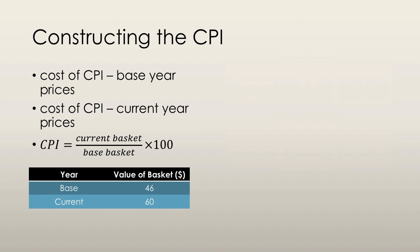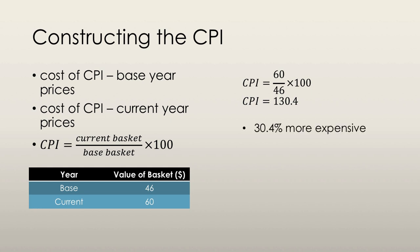CPI is equal to the current basket over the base year basket, multiplied by 100. So we take 60 divided by 46, multiply by 100, and we get a CPI value of 130.4. Compared to the base reference year, this indicates that the general price level is actually 30.4% higher than it was in the base year.